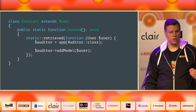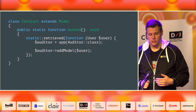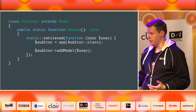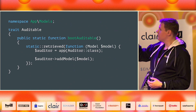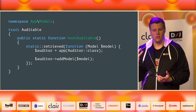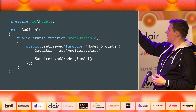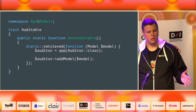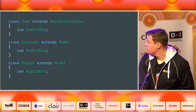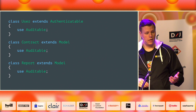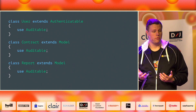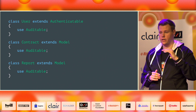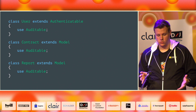With the 'retrieved' event, when you use Eloquent to retrieve something from the database, the retrieved event is fired. We just grab the auditor from the container and call add model, and it gets added to the collection of models. Adding this to every model is a lot of work, so there's a nicer solution: bootable traits. Instead, we create a trait, prefix the method name with 'boot' followed by the trait name, and inject the model class. Now we can add this trait to any model, and it will automatically be tracked. The cool thing is this also works with relationships.